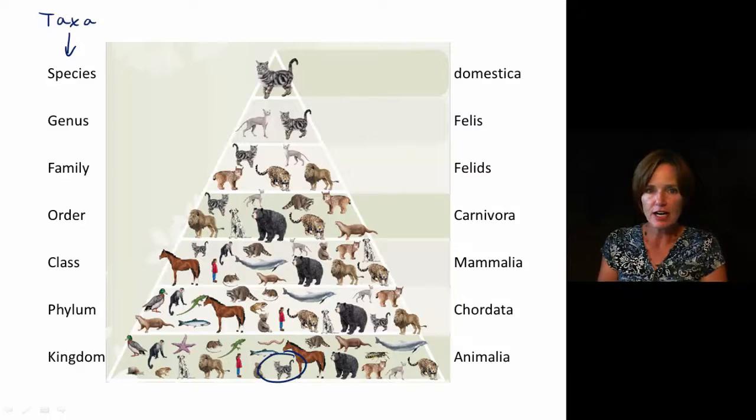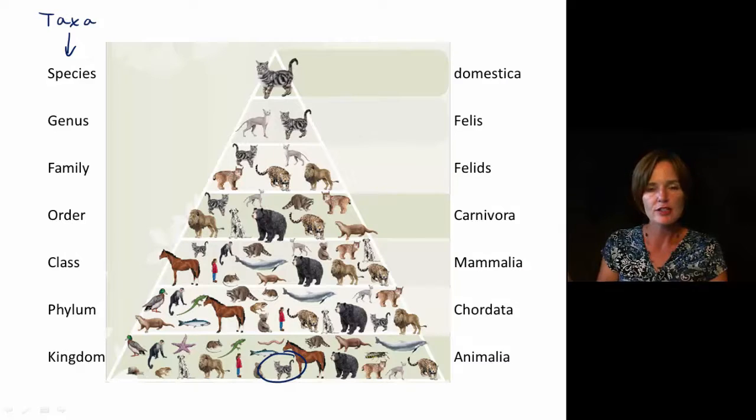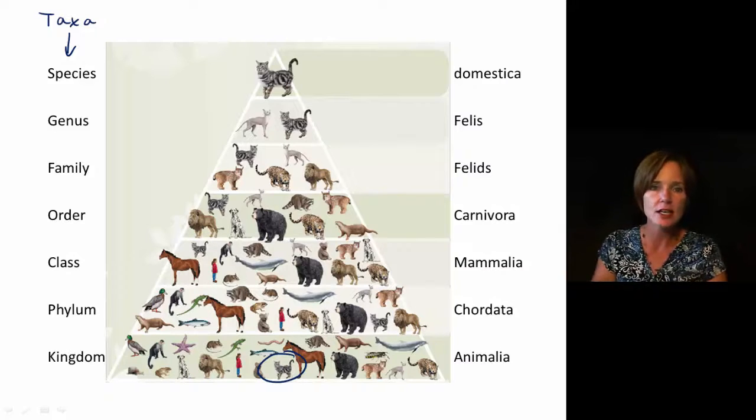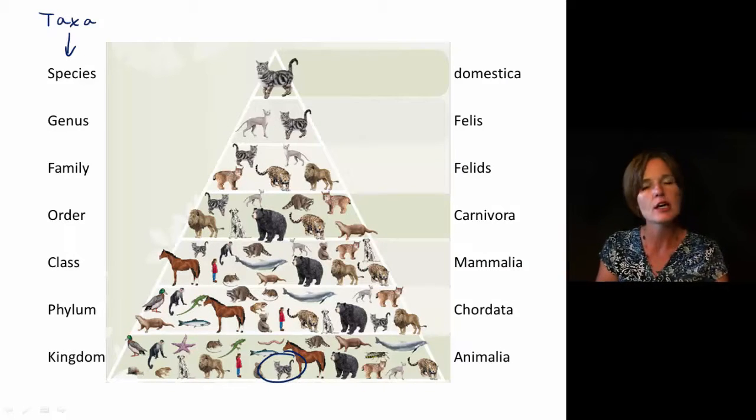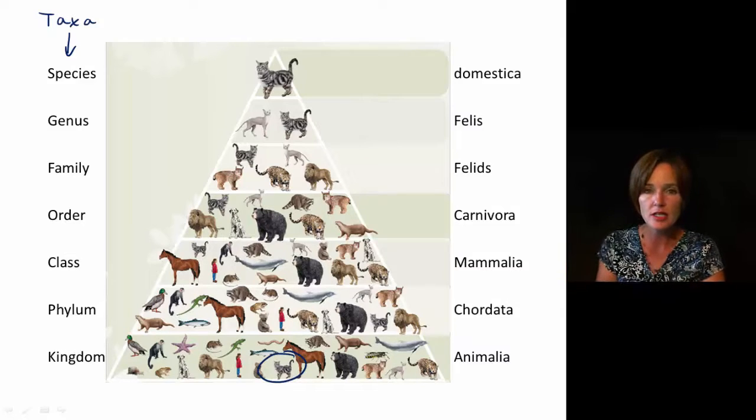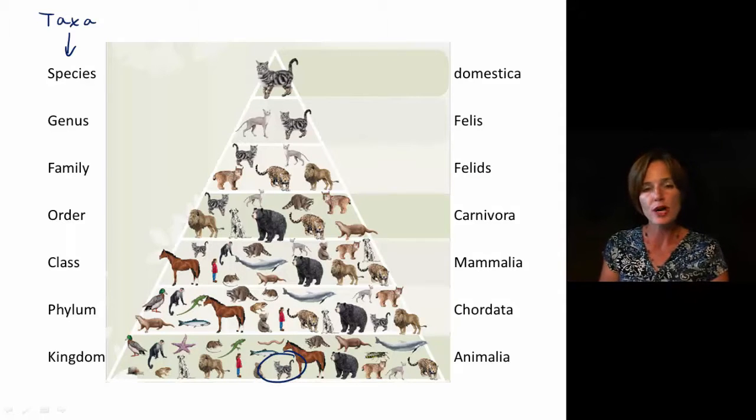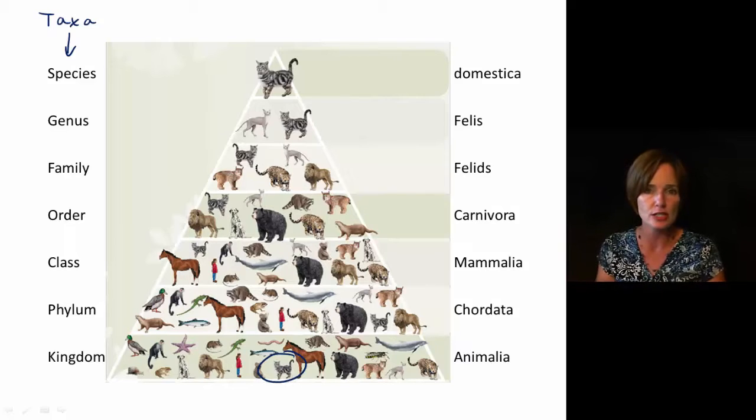So for every identified, characterized organism, scientists have gone through and they have determined all of the different taxonomic levels, which are the taxa, that that particular organism falls within. And when new data comes to light, these are reorganized a little bit so that we do have organisms within categories that share characteristics with each other.